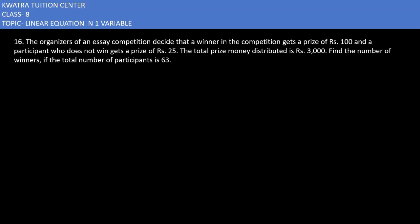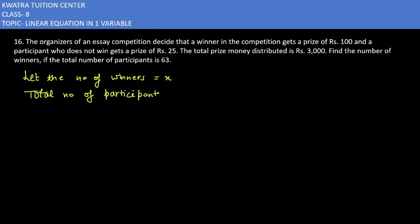Find the number of winners if the total number of participants is 63. So let's say the number of winners be x, and the total number of participants is 63.